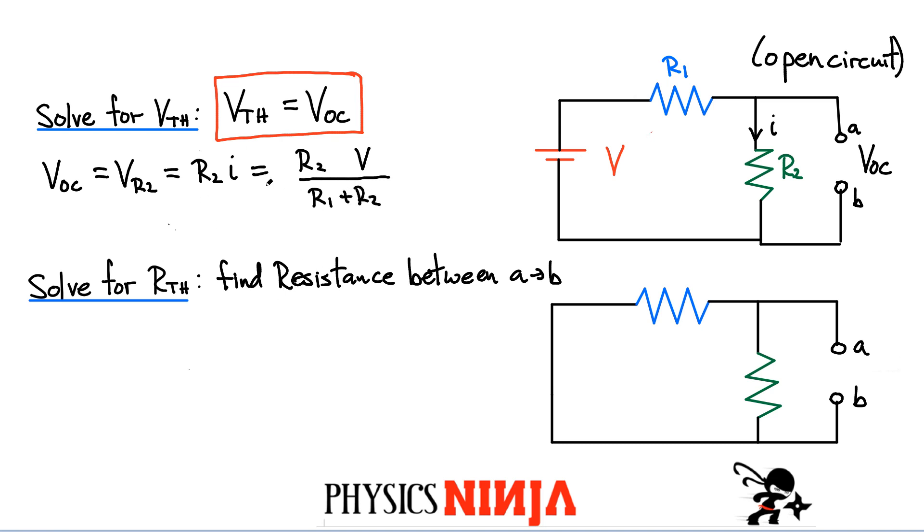Okay, so there you have it, folks. So we have V Thevenin, which is equal to V of the open circuit. So let's just write out one final expression. Just group all the resistance terms in the front. Remember, this is basically just a voltage divider here. So R2 divided by R1 plus R2 multiplied by the voltage. So there you go. We have our expression now for V Thevenin.